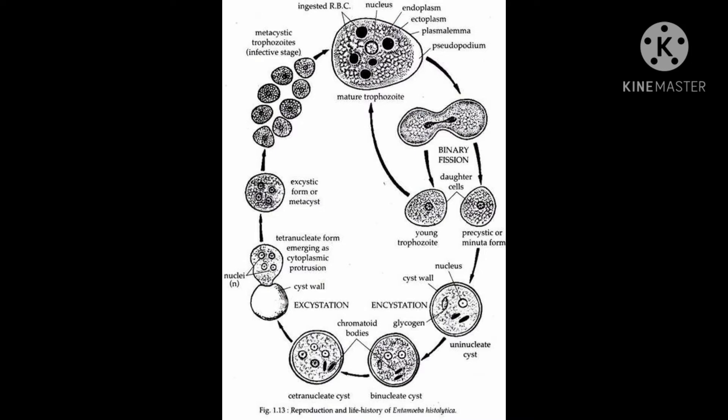It enters into the large intestine of man. In the large intestine, the tetranucleated cysts undergo mitotic divisions leading to the formation of eight amoebulae. From this, metacystic trophozoite formation takes place.